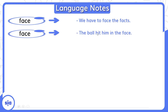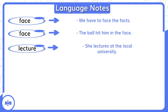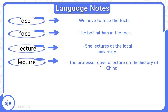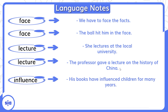طيب ازاي تيجي noun? The ball hit him in the face — يعني الكرة خبطته في وشه. Now we have the word lecture — محاضرة. ممكن تيجي verb وممكن تيجي noun. She lectures at the local university — تحاضر في الجامعة — verb. The professor gave a lecture on the history of China — محاضرة — noun.